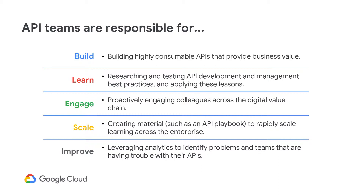Third is engagement. Similar to our focus on consumable APIs, the API team should be engaged with all the players in the digital value chain. This includes backend system teams, which the APIs will front, to the app developer in order to gain valuable insights to unearth areas to further iterate on and to enhance your existing services.